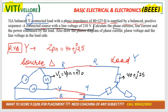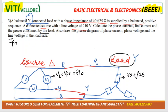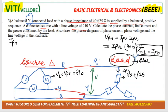They have asked us to calculate the phase current IPH, line current IL, and the power consumed by the load. Since the load is star-connected, line current equals phase current. We use the formula VPH = IPH × ZPH. ZPH is given as 40 plus J25, so we need to find VPH.